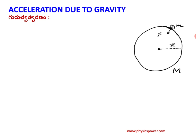Let us derive this expression. For example, capital M is the mass of the Earth and the Earth's radius is R. There is a small mass m located on the surface. The center of the Earth to the surface is approximately equal to the radius R. According to Newton's second law, F equals M times A. Here, A is the acceleration due to gravity, so F equals mg towards the center.